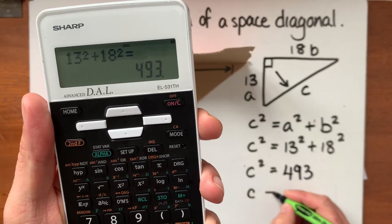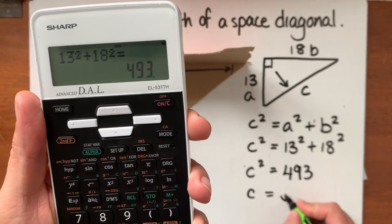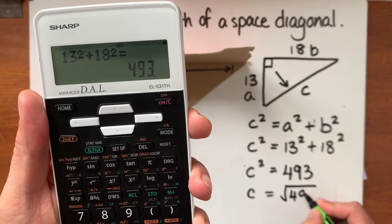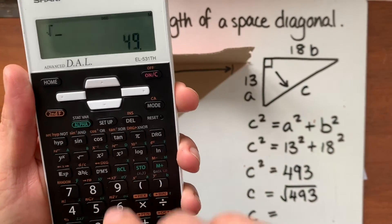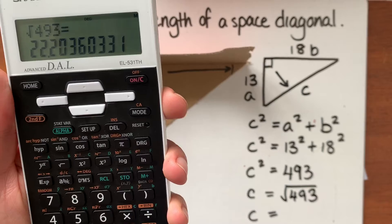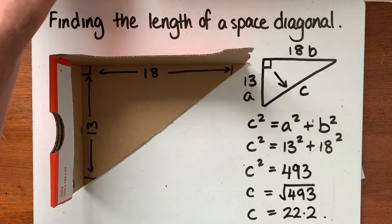I want to find C and remember this is the area of the square on side C and to find C I'm going to square root 493 and that gives me an answer of 22.2 units correct to one decimal place.